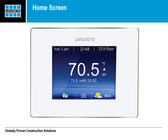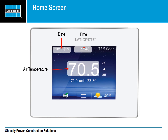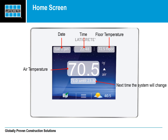Beginning from the home screen, you will see the date, time, air temperature, and floor temperature, along with the next time the system will change to the next program. The temperature can be set in Fahrenheit or Celsius.